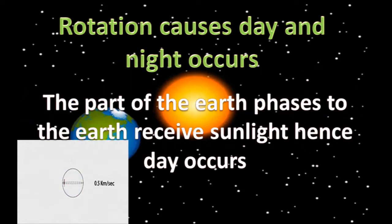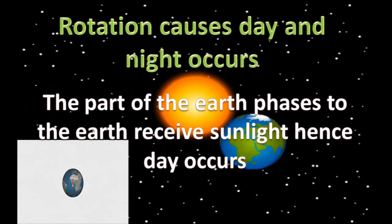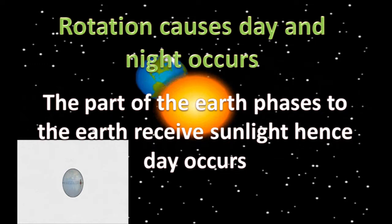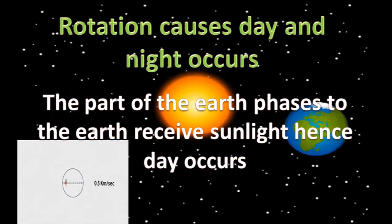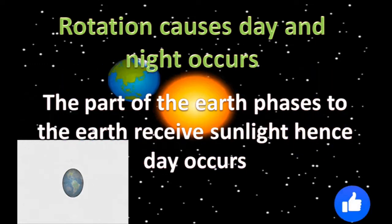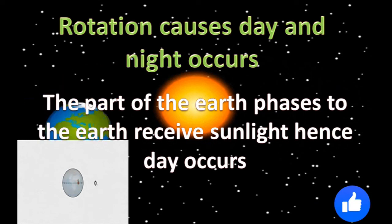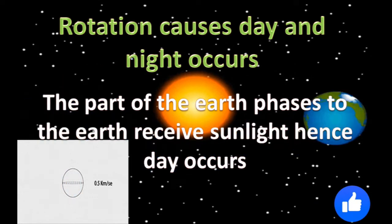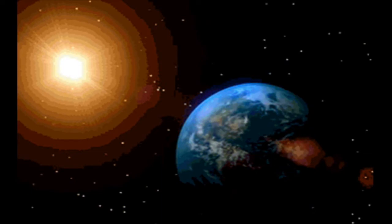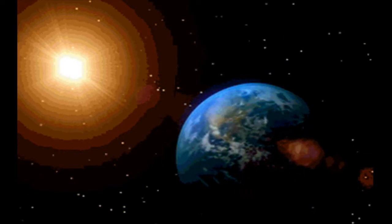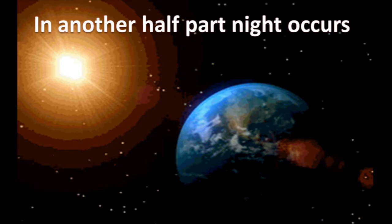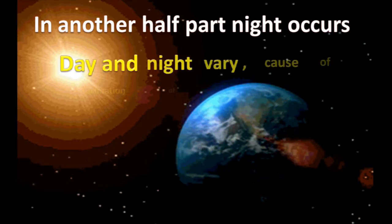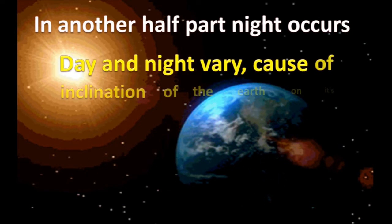The part of the earth that faces the sun receives sunlight, hence day occurs. In the other half part, night occurs due to the absence of sunlight.